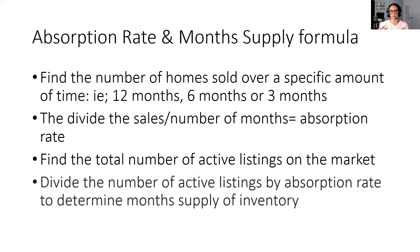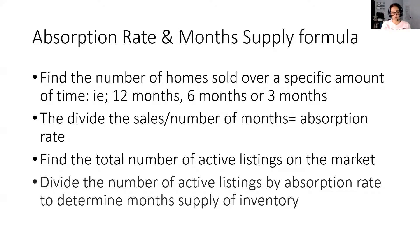For example, if you had 99 properties that sold over six months and there are 33 properties currently active, you would divide 99 by six — that gives you the absorption rate. The next thing you do is find the number of active listings on the market, then divide that by the absorption rate, and that gives you the months supply. That's what we want — to know how long it will take to absorb the inventory.